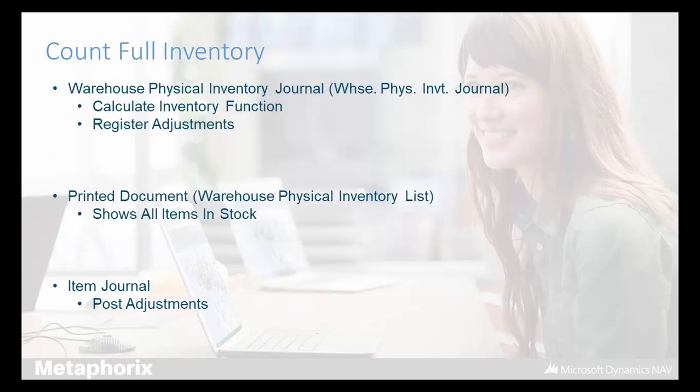Counting the full inventory is the easiest way to do a stock take — probably best if you have fewer items or it's a smaller business. It's a two-stage process: first, you do the warehouse physical inventory journal, where you view how much stock the system thinks you've got and then enter how much you've actually got and register those adjustments. The second part is the item journal, where you actually post those adjustments. You also get a printed document that can be given to someone on the shop floor to write down how many of each item they count.